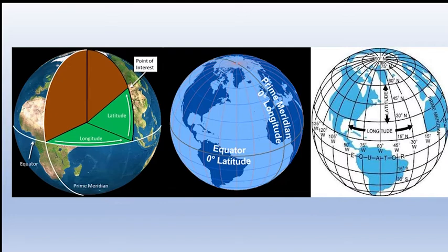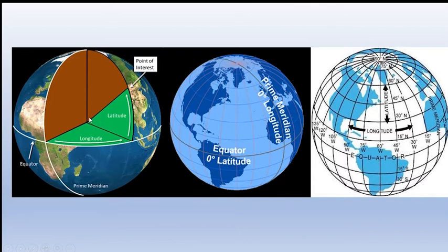Now we come to the concept of latitude and longitude. Latitude starts at 0 degrees at the equator, goes to 90 degrees at the poles. Moving north of the equator gives positive latitude, south gives negative latitude. These are horizontal great circles drawn with the center at the center of the Earth. Latitude tells you how much above or below the equator your place is.